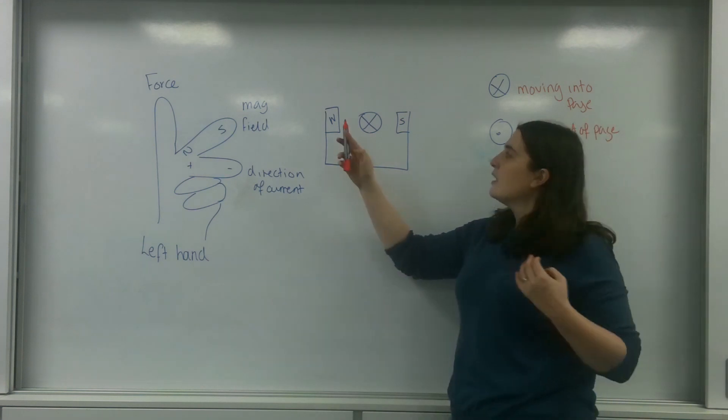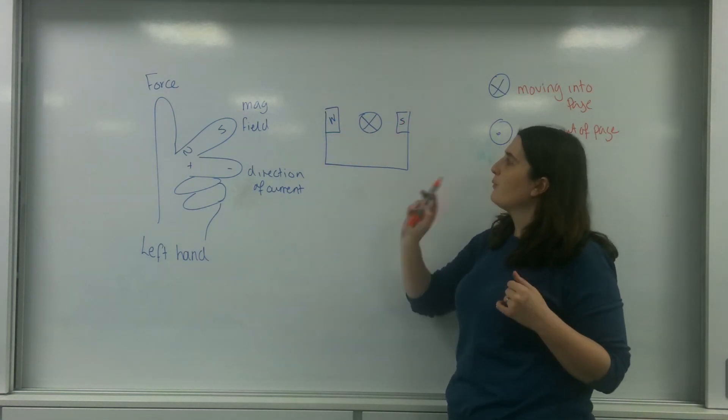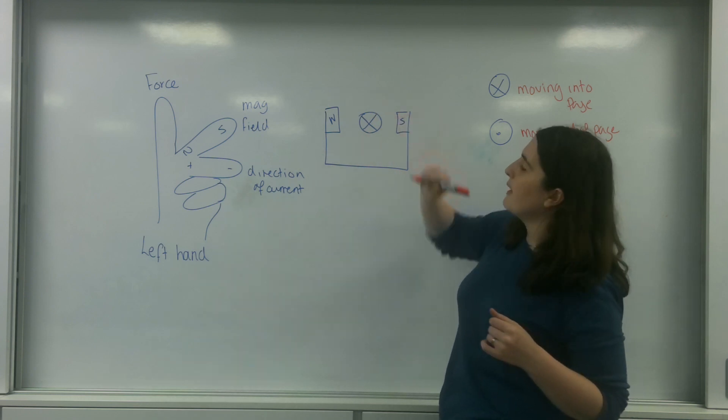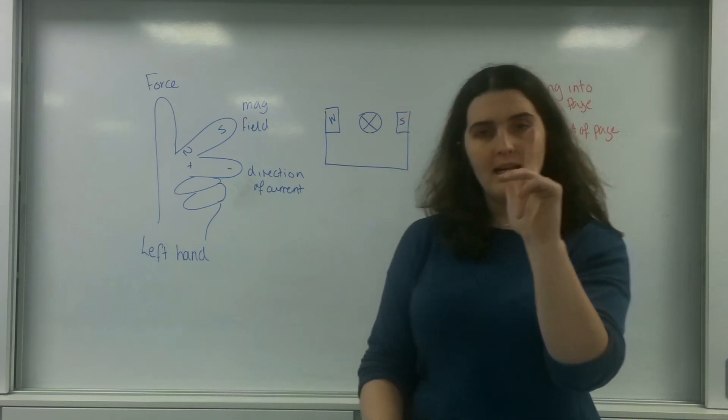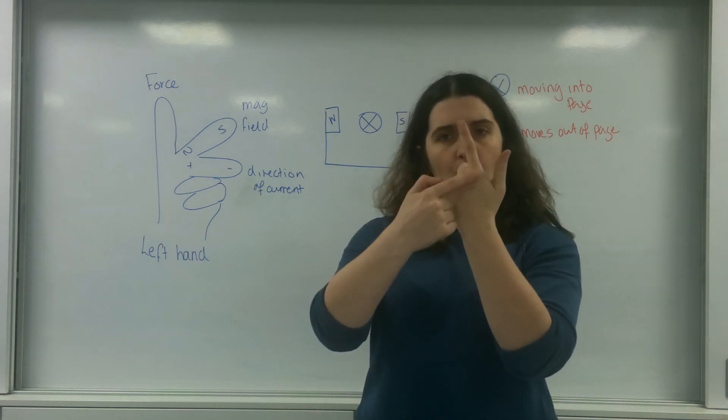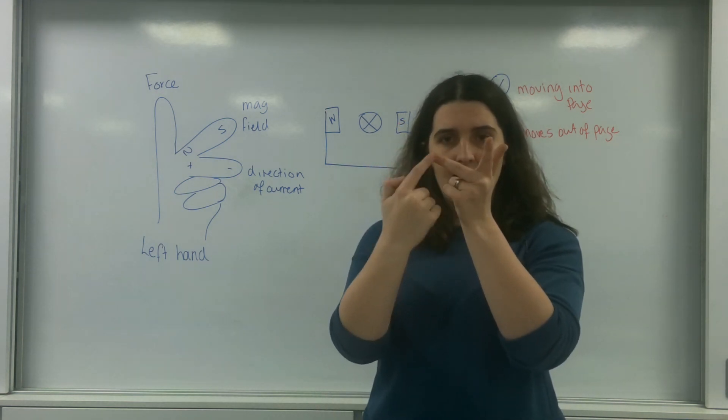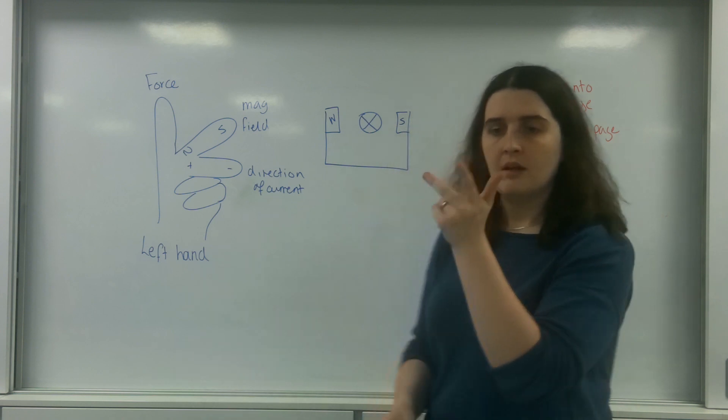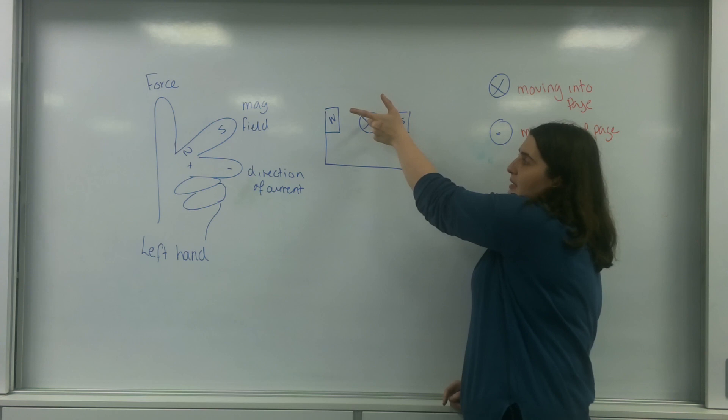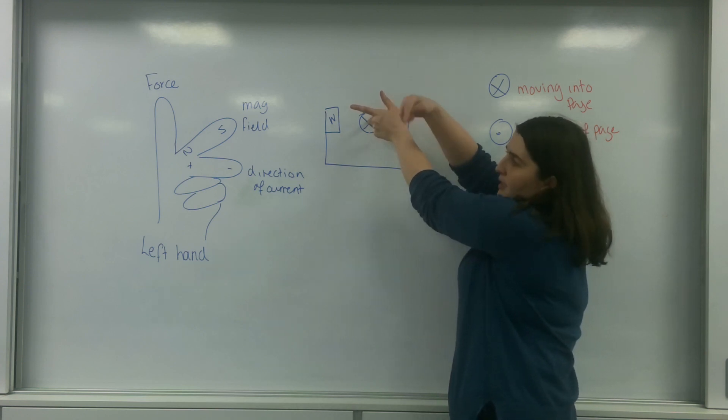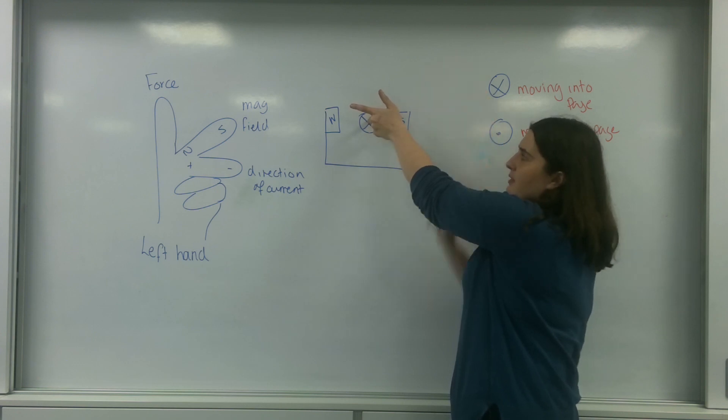So what I have here is my north to south, and my current is going into the page here. So taking my left hand, north, south, positive, negative. So my current is going into the page. So my electric field is going into the page. Positive this side, negative into the page.